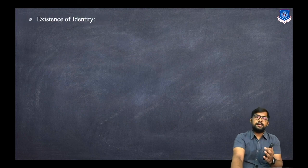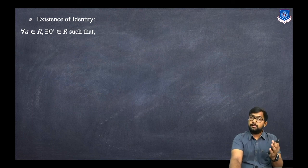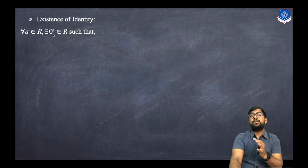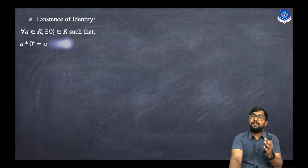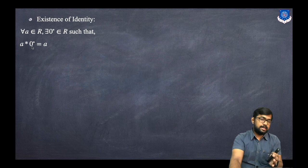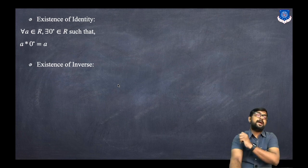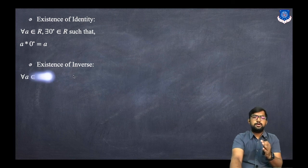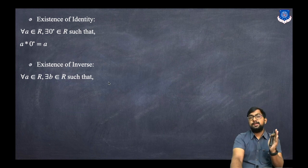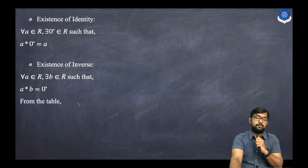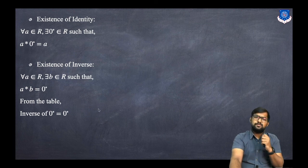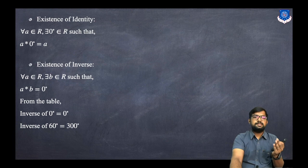For existence of identity: for every a in R, a star 0° = a, so 0° is the identity element. For existence of inverse, we need a star b = 0°. From the table: the inverse of 0° is 0°, the inverse of 60° is 300°, since 60° star 300° = 0°.